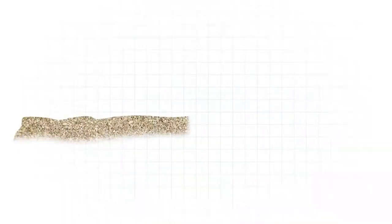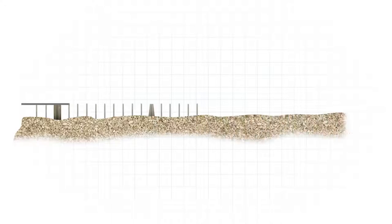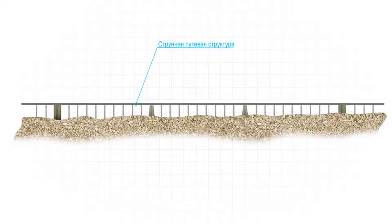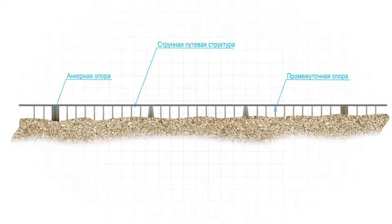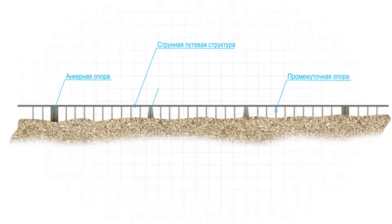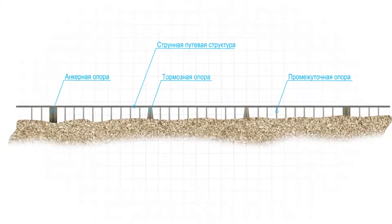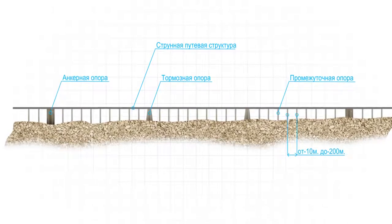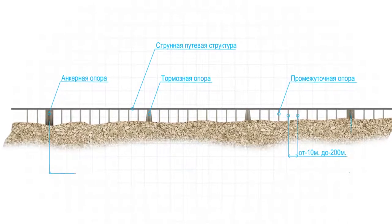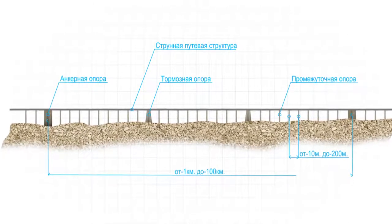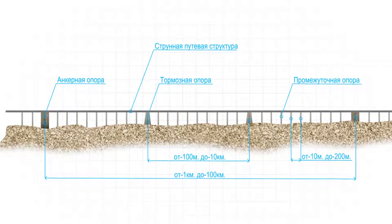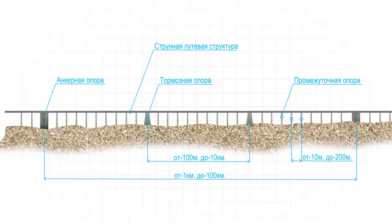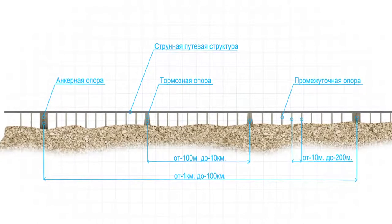The wind transport structure is placed on poles, divided into three types: promiscuous or supported, anchor, and in some cases, brake — installed with a step from 10 to 7 km on the modern level of development of SkyWay technology, and theoretically up to 10 km.